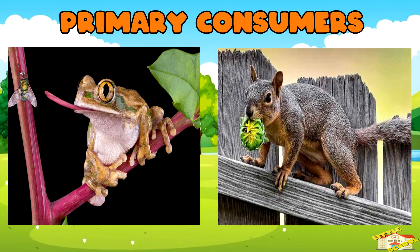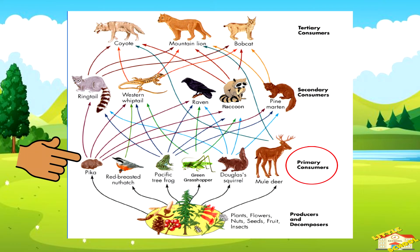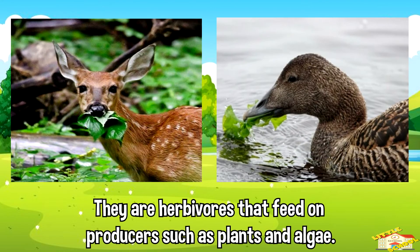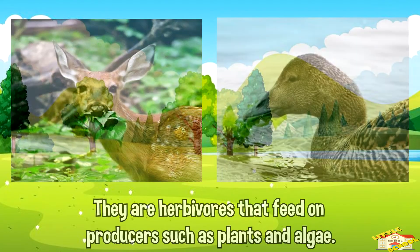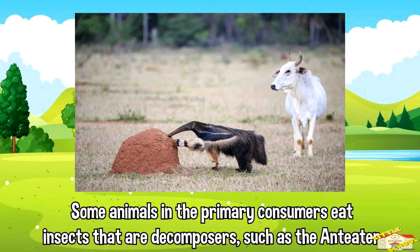Primary consumers are organisms that occupy the second trophic level in the food web. They are herbivores that feed on producers, such as plants and algae. Some animals in the primary consumers eat insects that are decomposers, such as the ant-eater.